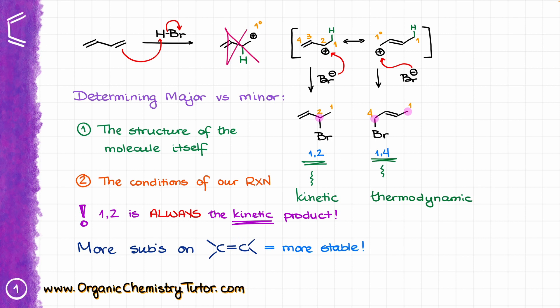This reaction is an equilibrium, which is very important to keep in mind. Since we have a resonance-stabilized carbocation as our intermediate, the products can easily reform this intermediate. That means even though the 1,2-product forms faster than the 1,4-product, it can just as easily break up and make the other isomer. For each step in this reaction, technically this is an equilibrium and we can go back to our resonance-stabilized intermediate, which can then be reattacked by bromine from the other position.